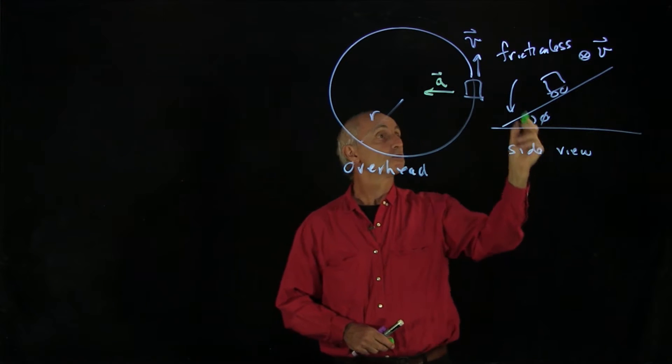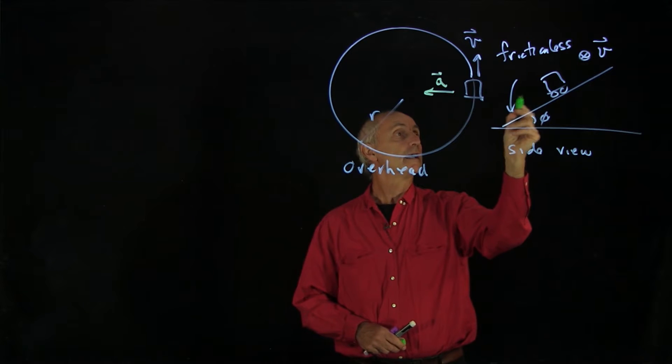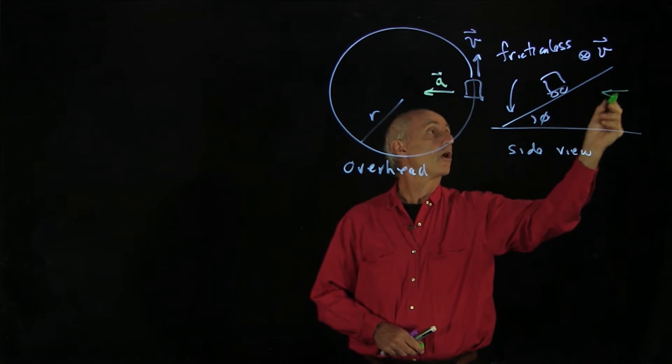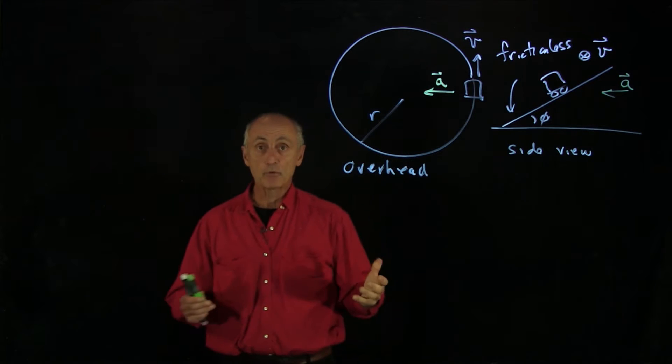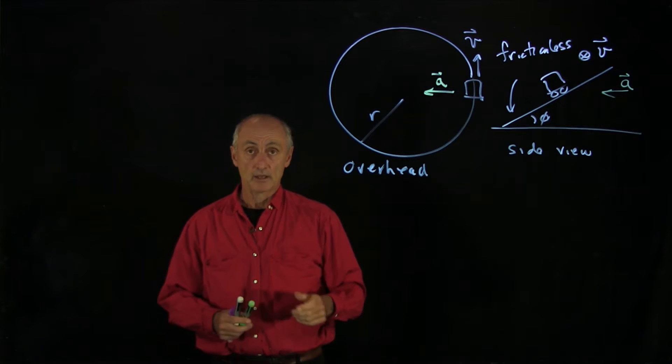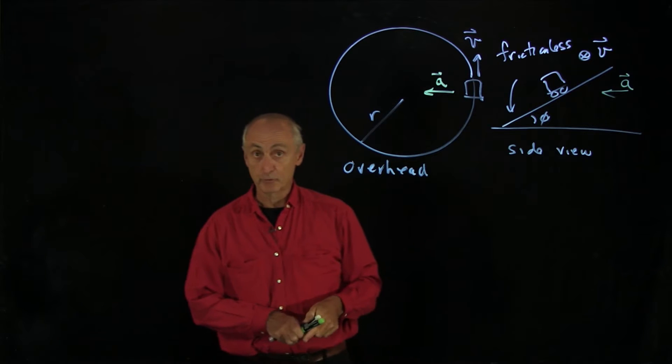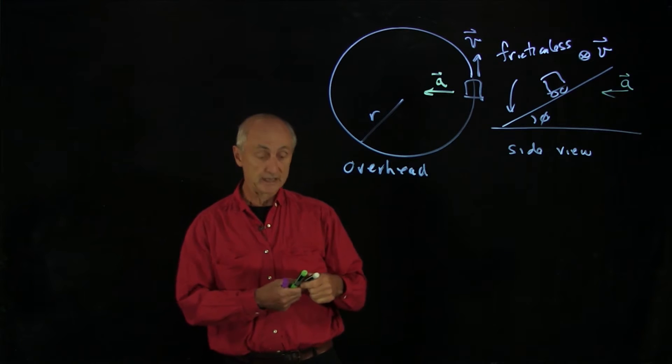From the side view, towards the center of the circle is in this direction. So the car is accelerating radially inward, and that will guide how we choose our coordinate system. We can then write our free body force diagram. So let's begin with the analysis.